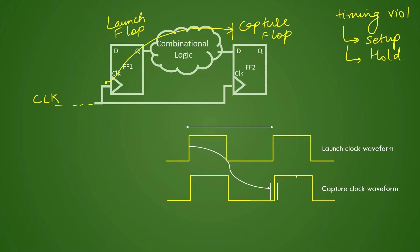If we try to understand this concept by the waveform: this is our launch clock waveform, which represents the waveform of the launch flip-flop, and this is our clock period. The below one is your capture clock waveform. Your data should reach before — once it is launched from the launch flop — it should reach before the capture clock edge starts. This is our typical window.